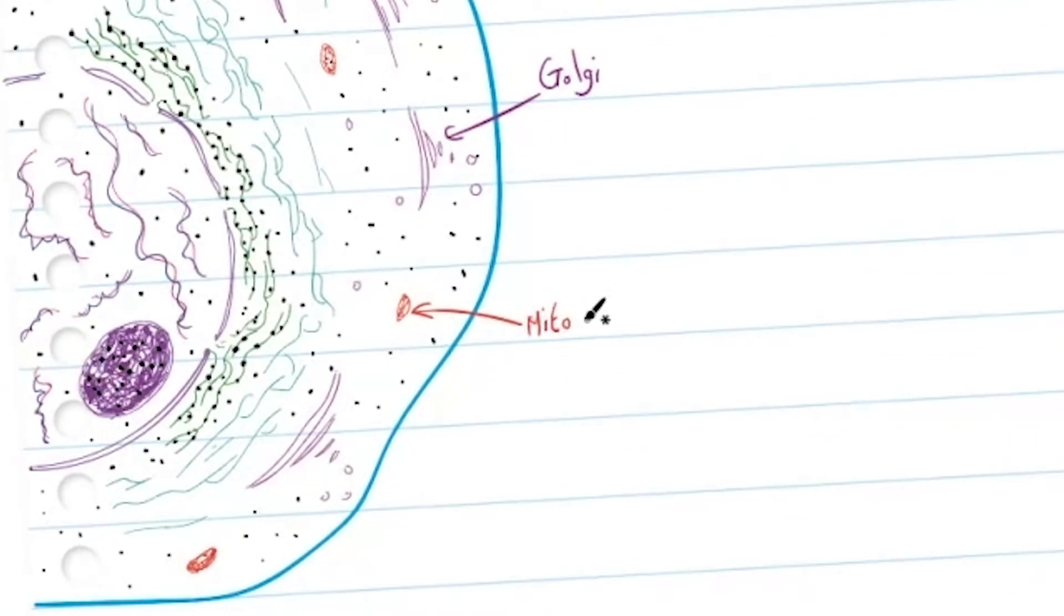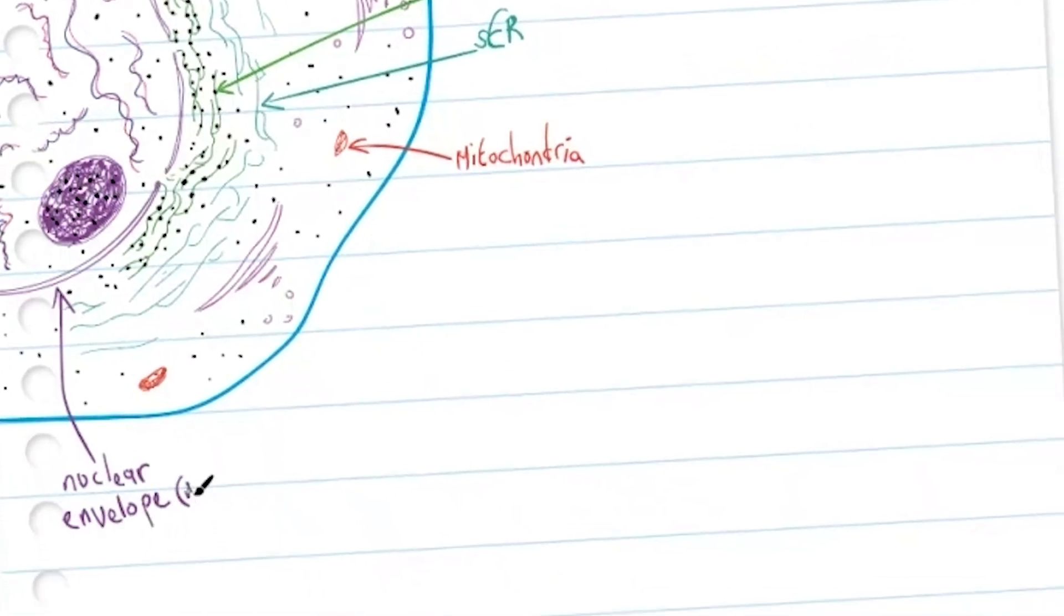We can also see a few mitochondria within the cell, and we also have some smooth endoplasmic reticulum and of course rough endoplasmic reticulum. We have the nuclear envelope or the nuclear membrane and the nucleolus. Within the nucleus we can see the DNA and the chromatin.